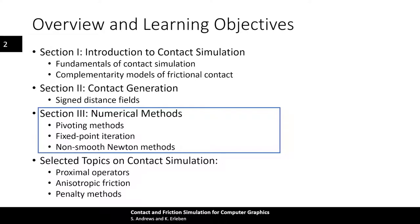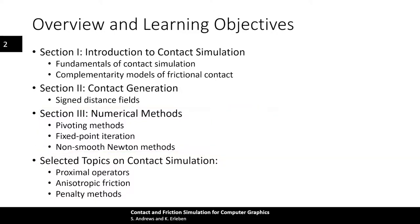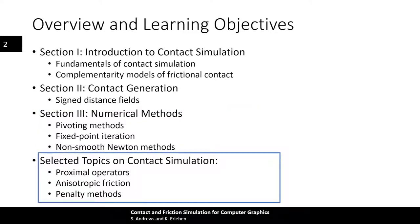Then we delve into the numerical methods which may be used to solve the non-linear and linear complementarity problems used to model contact. The goal of these numerical methods is to compute a constraint force or impulse that models the dynamical behavior of frictional contact. There are numerous techniques proposed on this topic, each with their own advantages and disadvantages. Finally, we will touch on selected topics including proximal operators for models of contact and isotropic friction, and penalty-based methods for modeling contact.